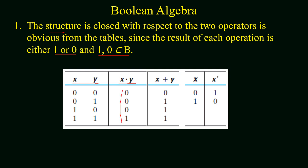Similarly, x plus y column also have values of 0 or 1, and the result also belongs to set B. So we can say that the structure is closed with respect to two operators, addition and multiplication, since the result of each operation is either 0 or 1 and belongs to set B.